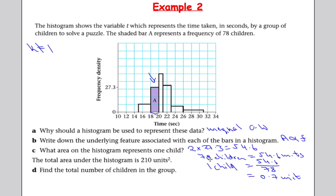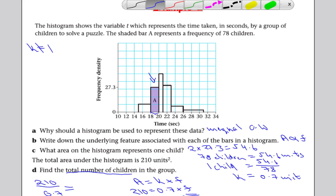So 1 child equals 0.7 units, not like 1. Earlier it would have been 1, but k is now equal to 0.7. That means if the total area is 210, I can work out the total number of children. So 210 divided by 0.7 is going to give me the total number of children. k equals 0.7. I know that the area equals some constant multiplied by the frequency. If the total area is 210, and that's equal to 0.7 times the frequency, that means the frequency, the total frequency, is going to be 210 divided by 0.7. And 210 divided by 0.7 is 300. That's the total number of children in the group.